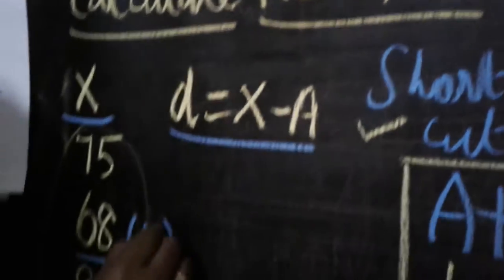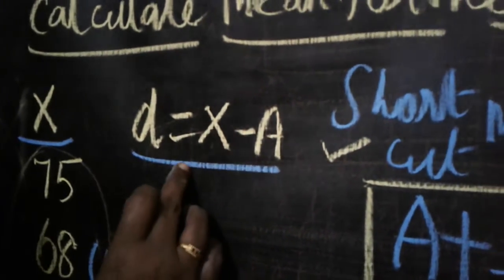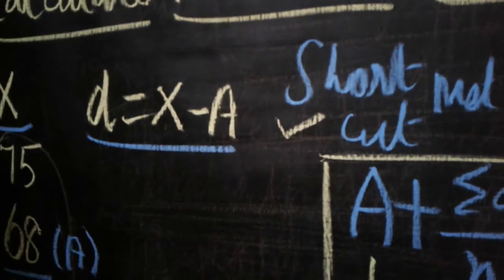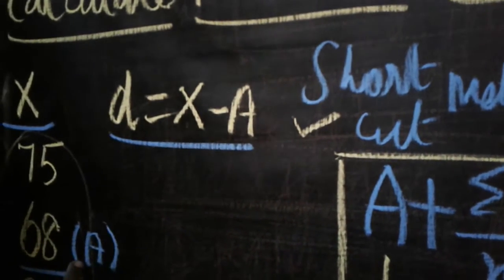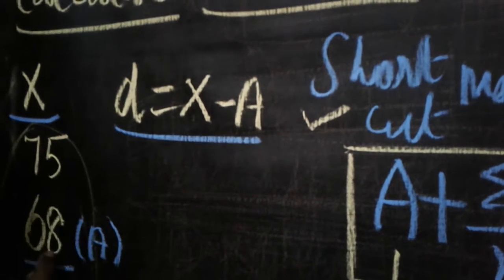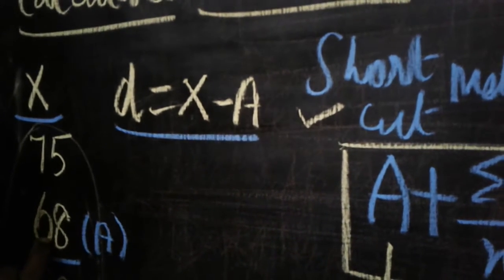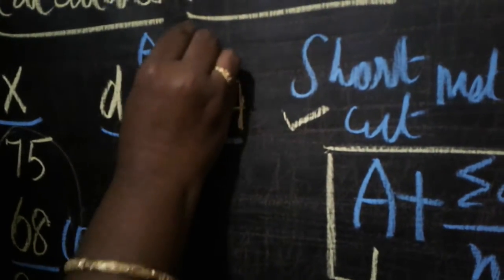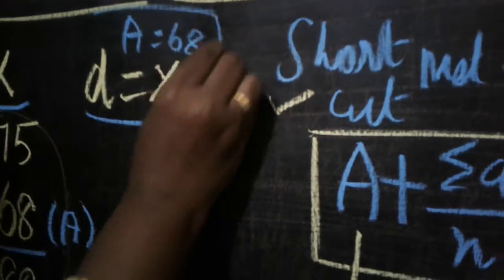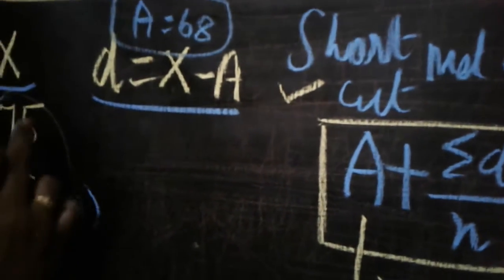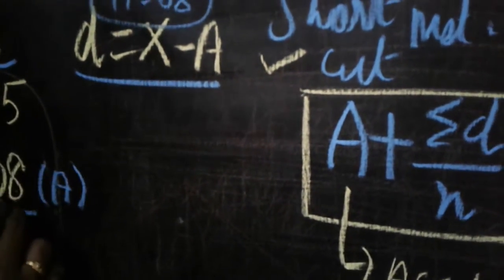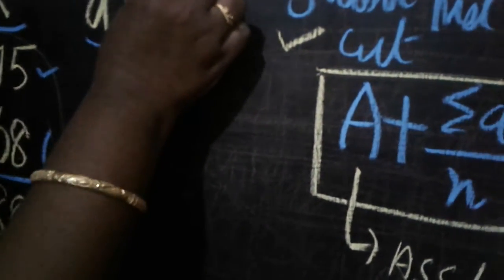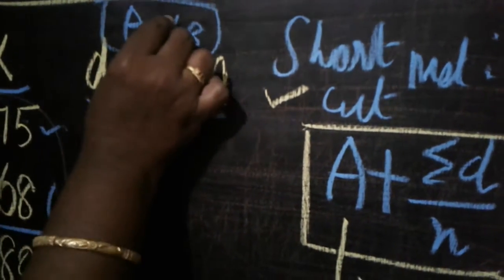Write 'a' clearly for each value. In the formula a + Σd / n, 'a' is the assumed value — we take any one x value as the assumed mean. So the assumed value a = 68. Now we want to calculate the d values. d is obtained by the formula: d = x − a, meaning each x value is subtracted from a.